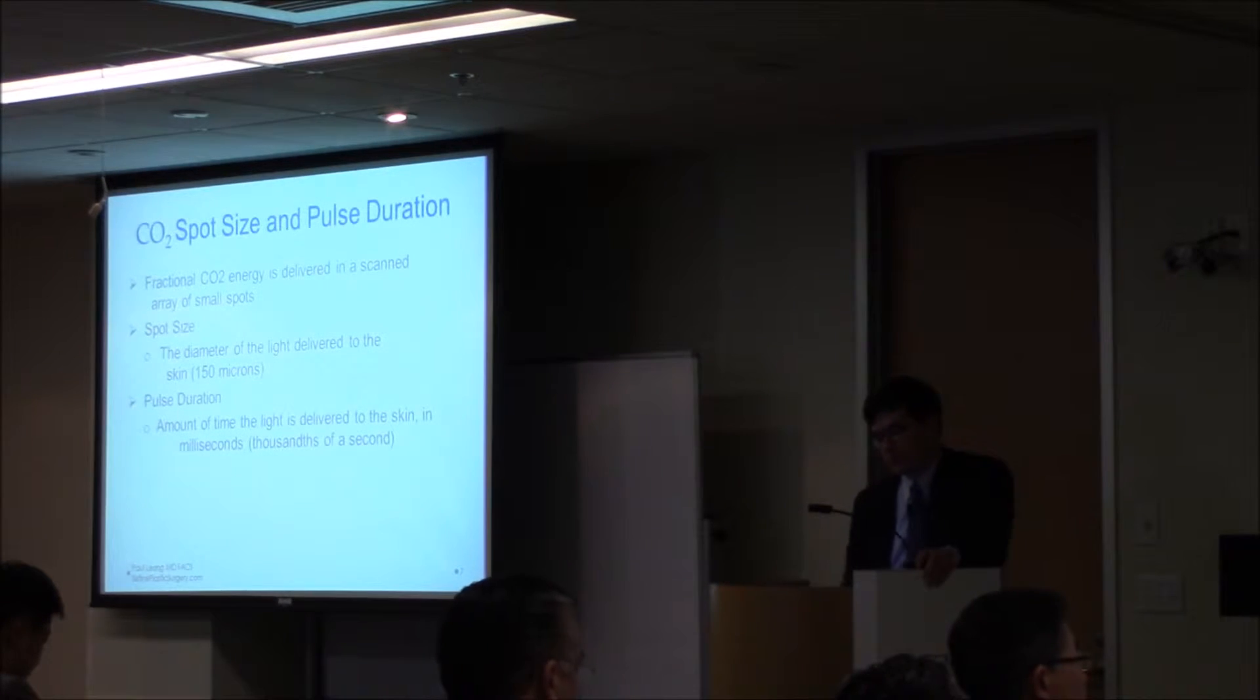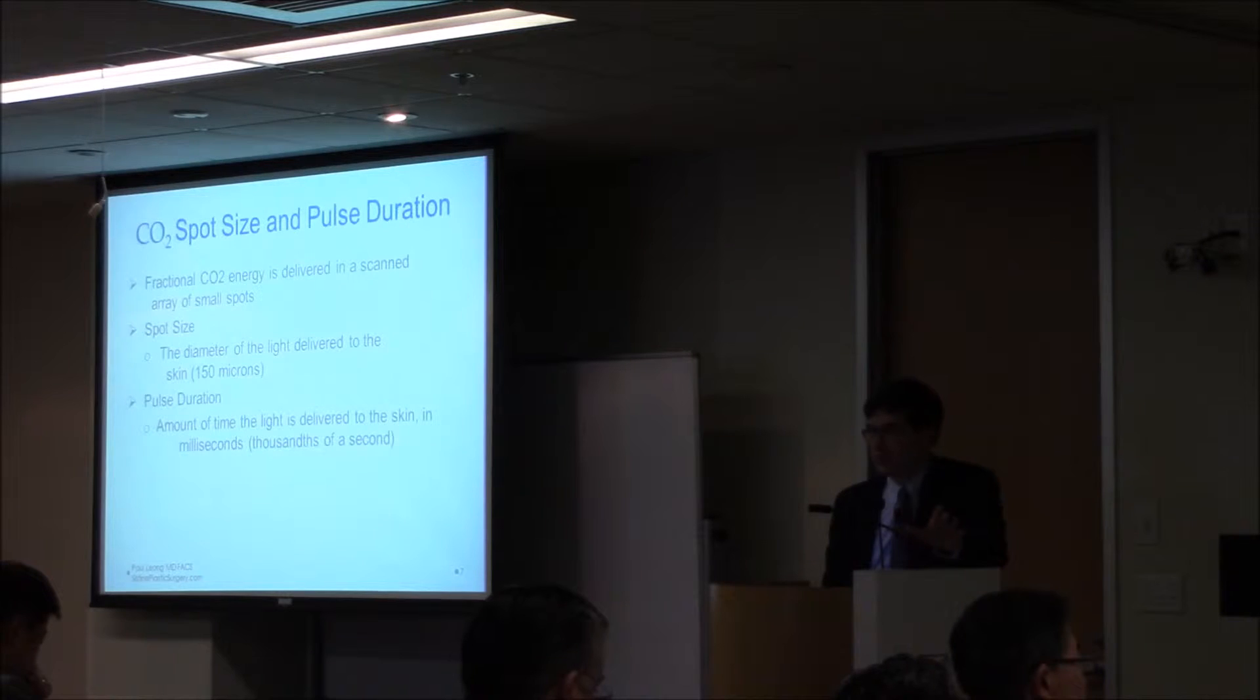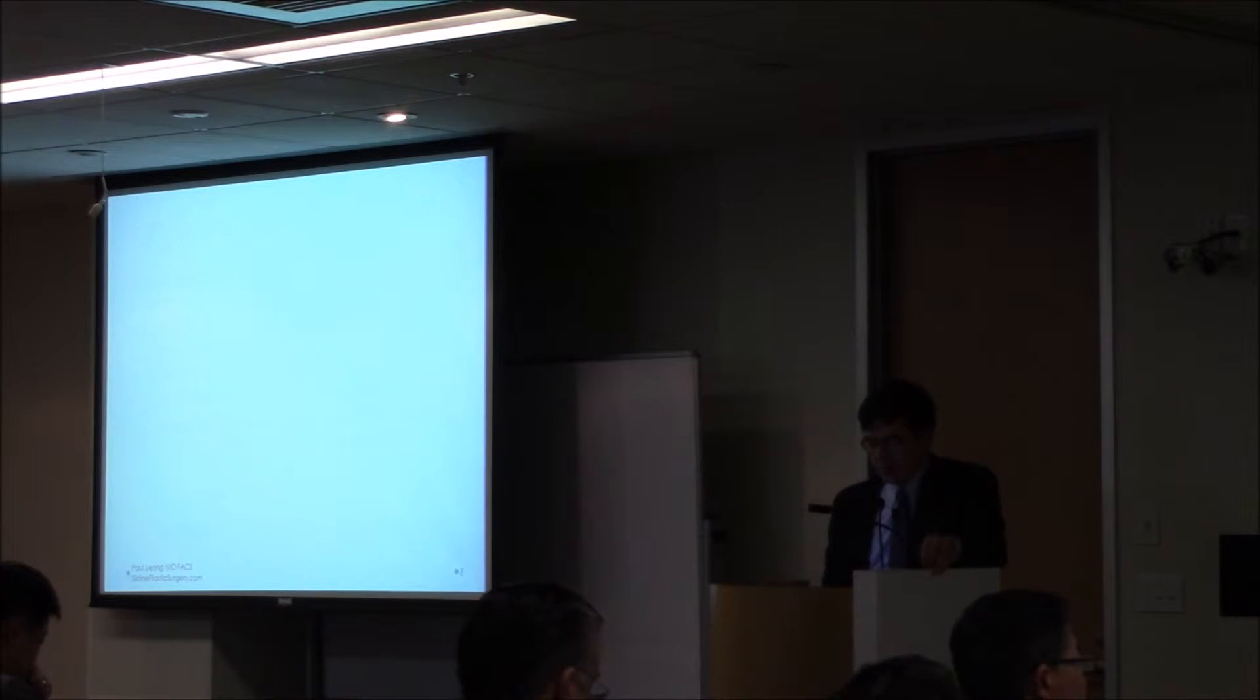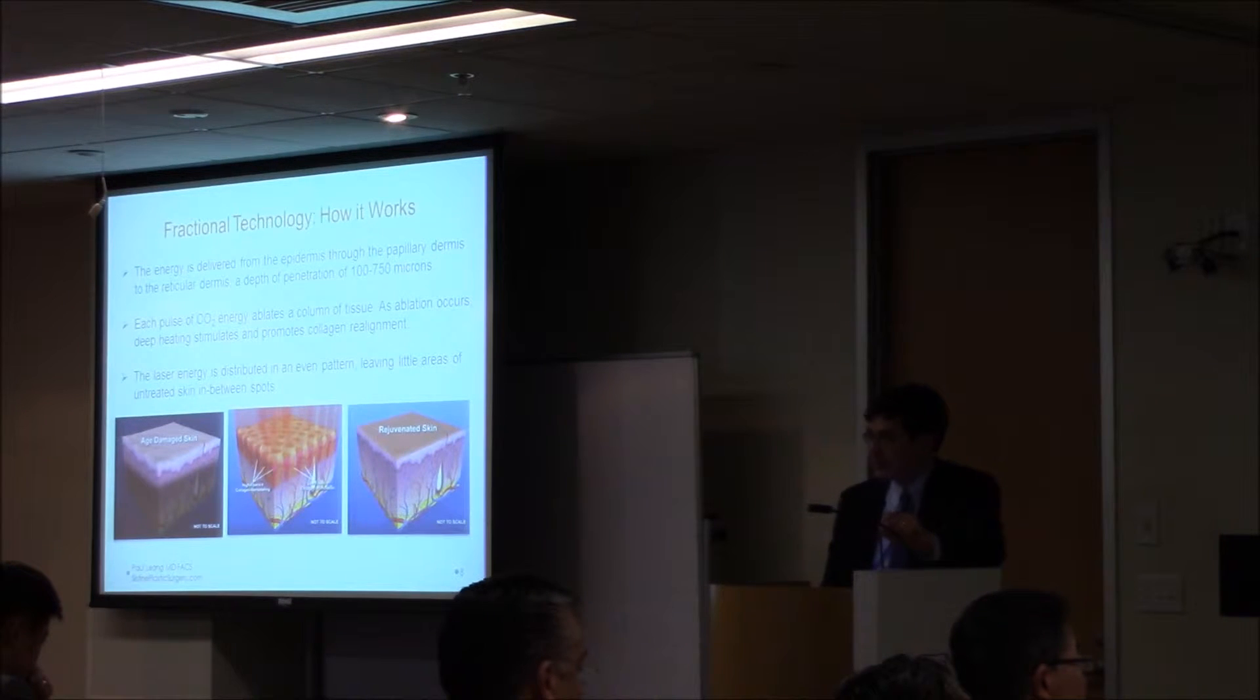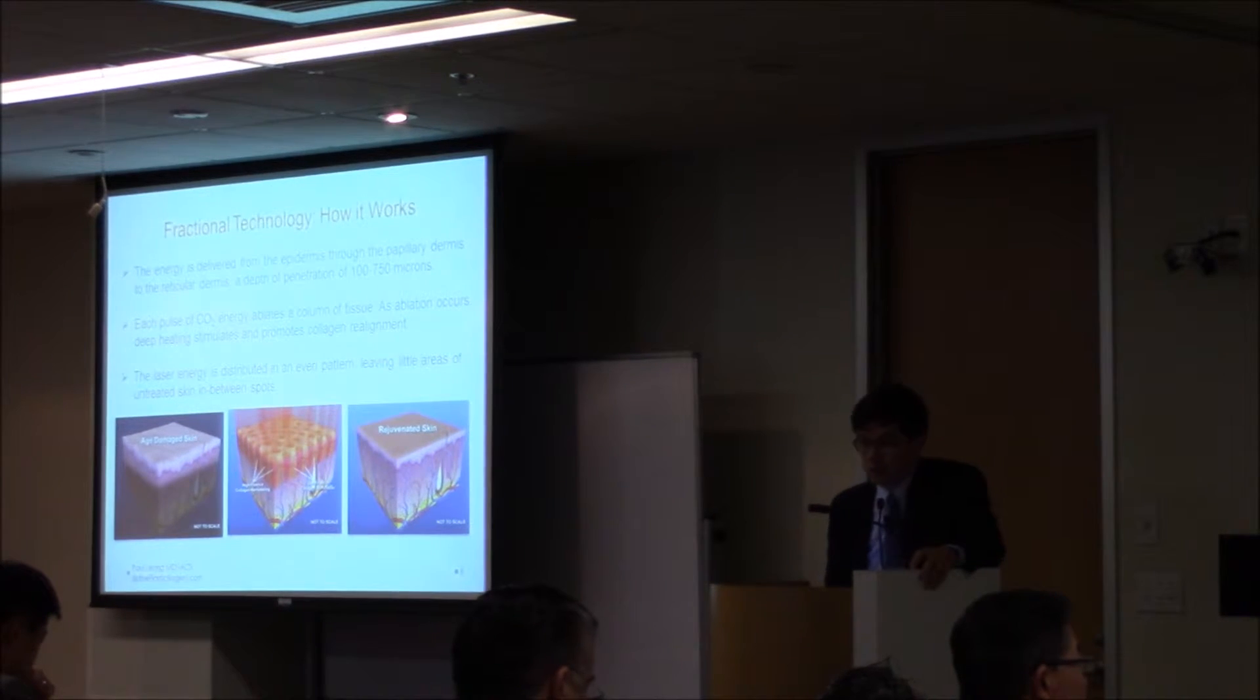Technical details: CO2 spot size of 150 microns - the size of that tiny beam of light coming down on the skin. The pulse duration is how long the light is on. All of these parameters can be manipulated to get a less or more intense treatment. Fractional technology delivers energy from the epidermis through the papillary dermis and into the reticular dermis, 100 to 750 microns. Each pulse of CO2 energy ablates a column of tissue, but then heat spreads out from those columns. The idea is over a period of three to four months, you get continued collagen contracture in response to that heat injury in the tissue that was not ablated.